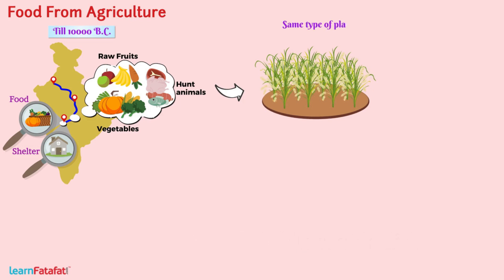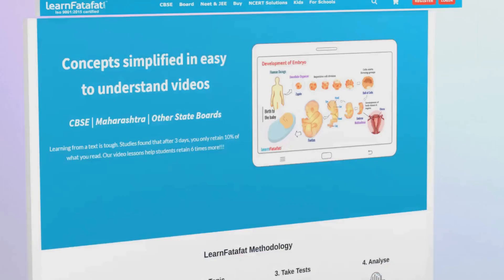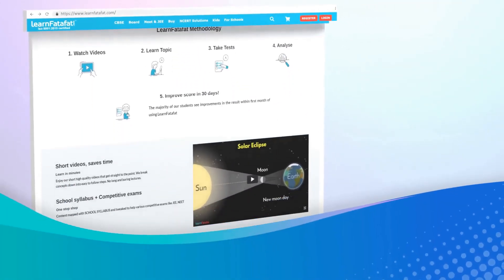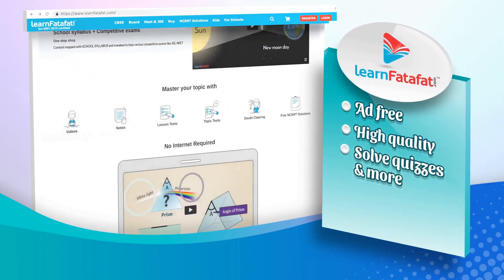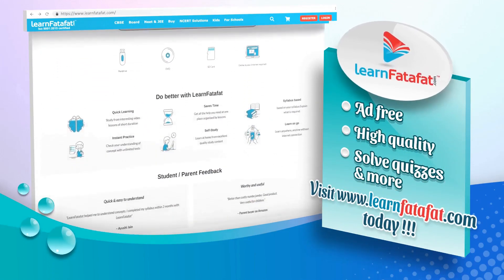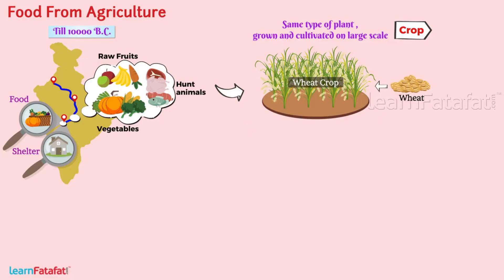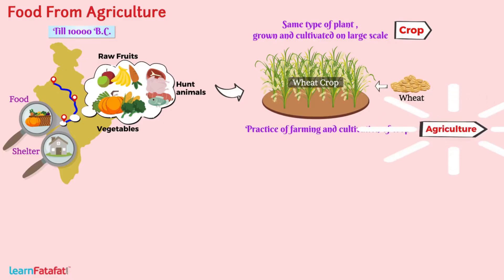The same type of plant — for example wheat — that is grown and cultivated on a large scale is called a crop. Here it is wheat crop.